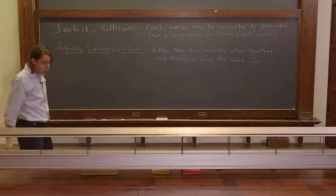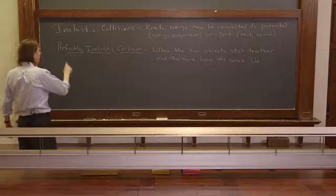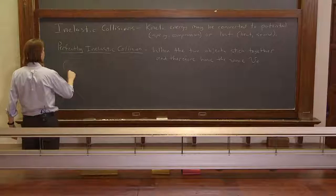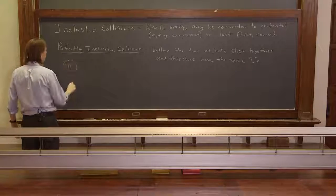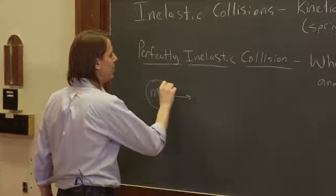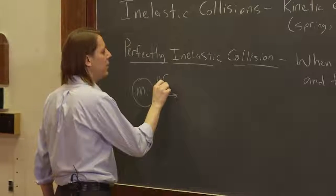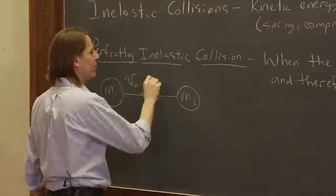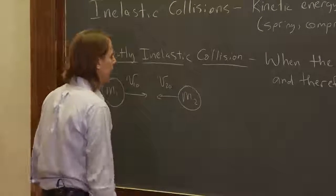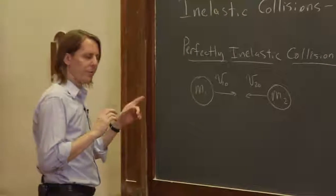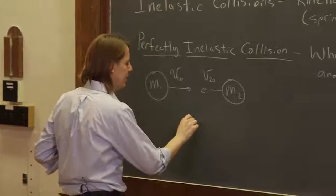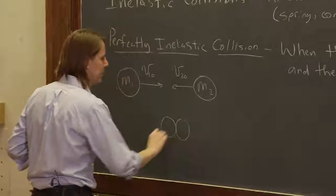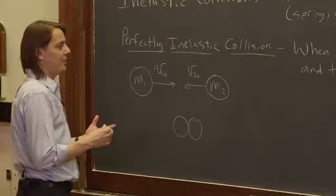So let's draw a perfectly inelastic collision. So you would have mass one, it's going to come in with some velocity V1 knot. And you might have mass two, it's going to come with some velocity V2 knot. But then, the point of a perfectly inelastic collision is that in the end, they make one mass. It has a mass M1 plus M2.